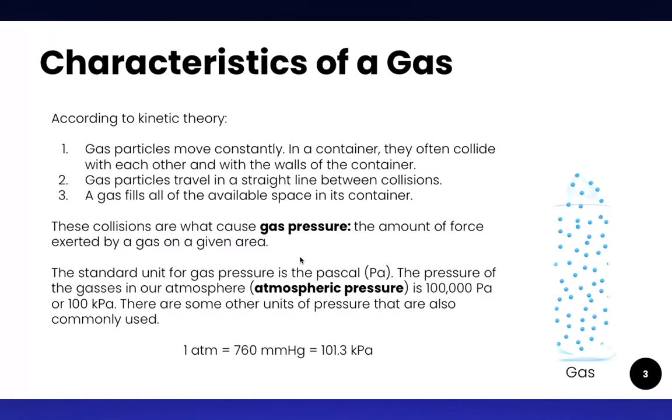All right so now let's go over some of the textbook definitions of these states of matter. Characteristics of a gas. According to kinetic theory gas particles move constantly and in a container they often collide with each other and with the walls of the container. Second part of the kinetic theory is that gas particles travel in a straight line between collisions and that a gas fills all of the available space in its container meaning that it has no fixed volume and it will shift to fill whatever volume is available to it.